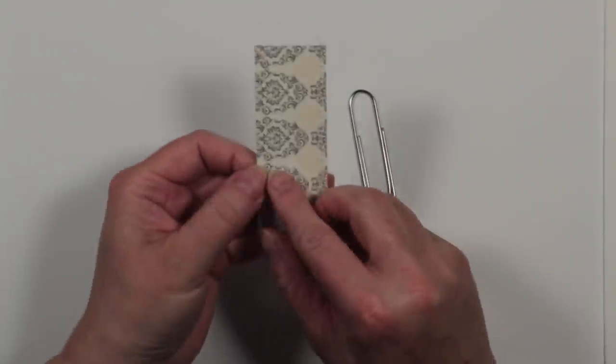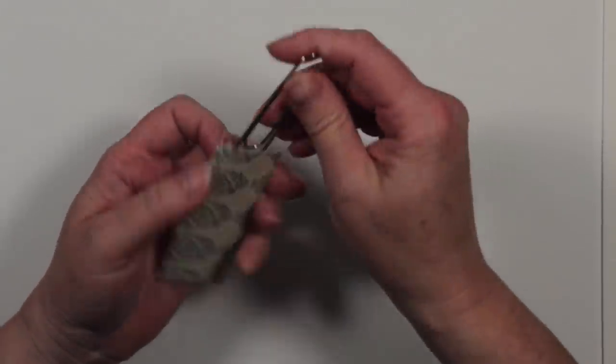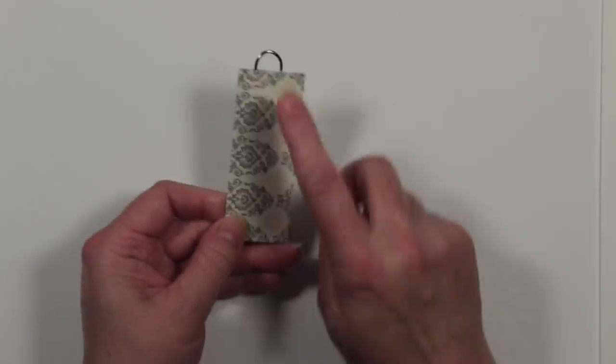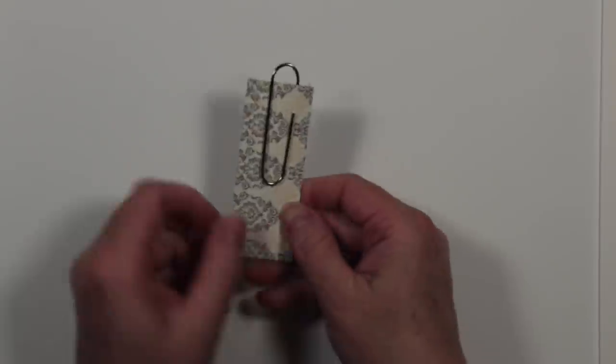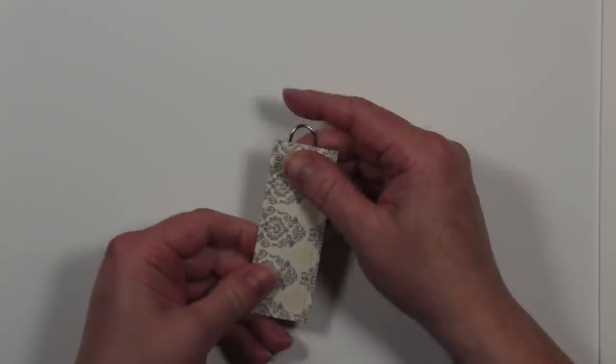My pocket is sewn down those edges, and if I pop my paperclip inside, I've got the loop at the top where I can put some lace or a bow, and I've got a fixture at the back that will secure it to a page.